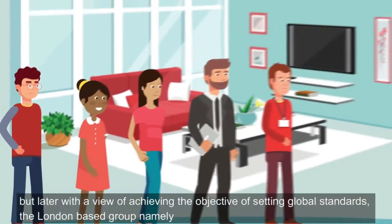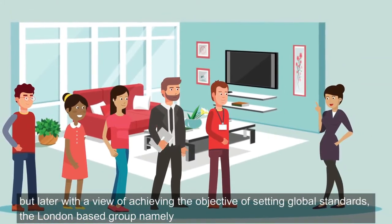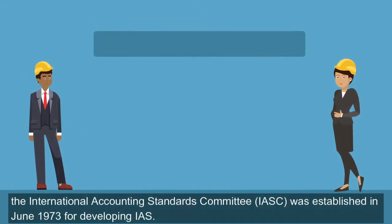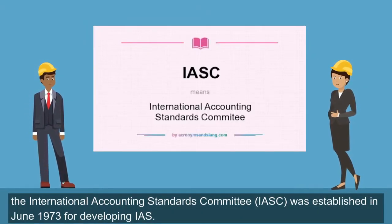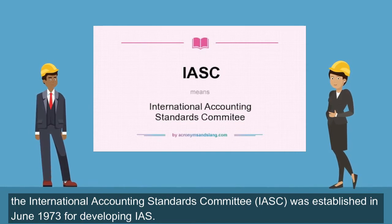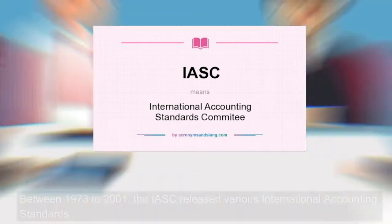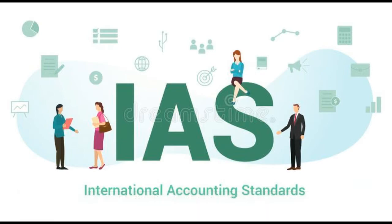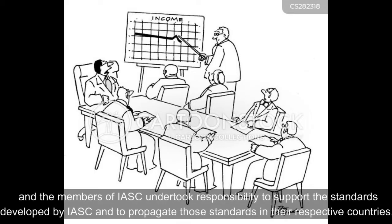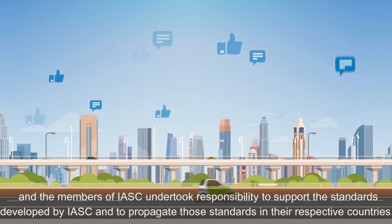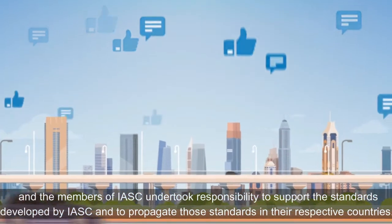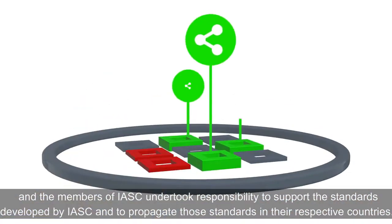But later, with the view of achieving the objective of setting global standards, the London-based group, namely the International Accounting Standards Committee, was established in June 1973 for developing IAS. Between 1973 to 2001, the IASC released various international accounting standards, and the members of IASC undertook responsibility to support the standards developed by IASC and to propagate those standards in their respective countries.